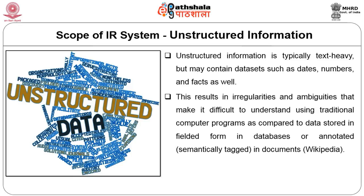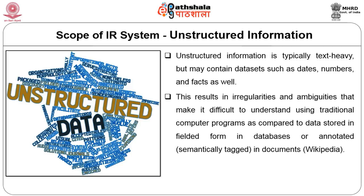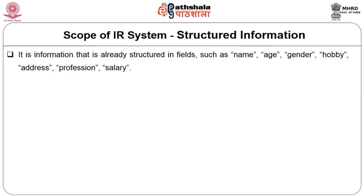That brings us to structured information. Structured information is that which is already structured into fields, and the fields may have names such as in a bibliographic database: author name and title. We may have general purpose databases where field names could be age, gender, hobby, address, or profession, salary. So if we have a database of persons, typically these are the elements that may occur. This is typical of what we find in a relational database table. When information is organized in a structured form, it is usually relatively easy to retrieve.